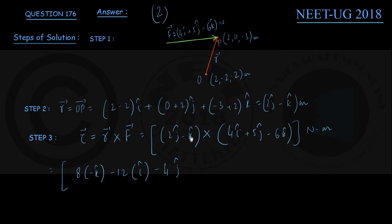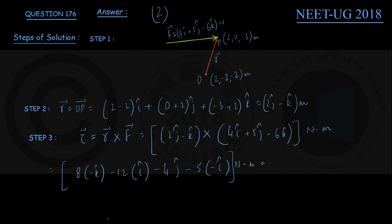Continuing: (−k) × 4i = −4j confirmed. Next, (−k) × 5j: numerical part is −5 and k × j = −i, so this gives +5i. Finally, (−k) × (−6k): k × k is a null vector, so this term is zero. Collecting all terms: i components: −12i + 5i = −7i. j component: −4j. k component: −8k. Unit is newton-meter.